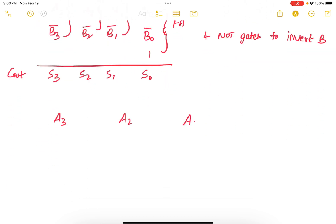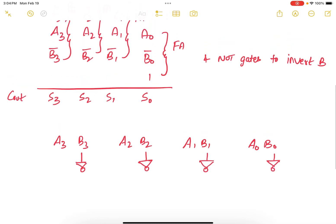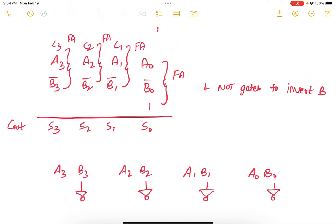A3, A2, A1, A0. B3, B2, B1, B0. First we flip the bits of B, so put a NOT gate here, invert it, and then we need four full adders.